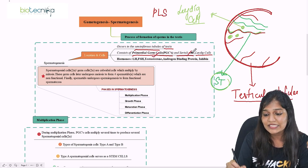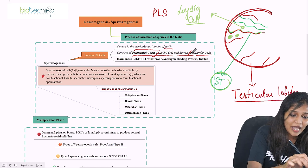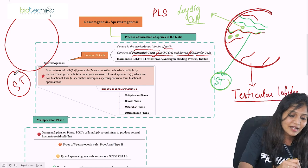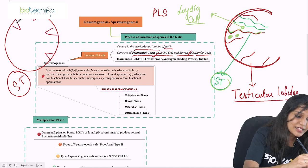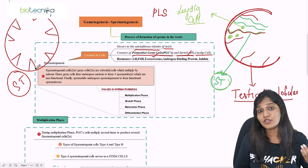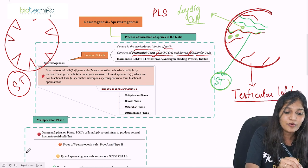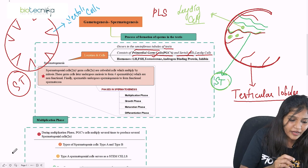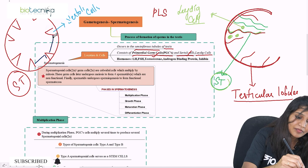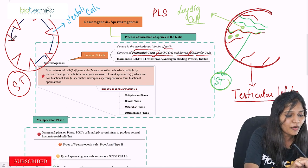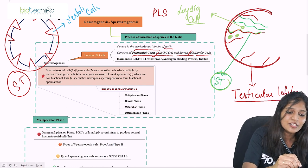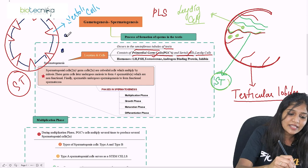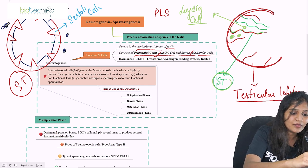Inside the seminiferous tubules, two cells play important roles. There are some pyramid-like structured cells mainly responsible for providing nourishments for sperm production — these are called Sertoli cells. And there are a lot of cuboidal cells present in between them, called primordial germ cells or spermatogonium. Outside the seminiferous tubule, you will see a lot of Leydig cells.